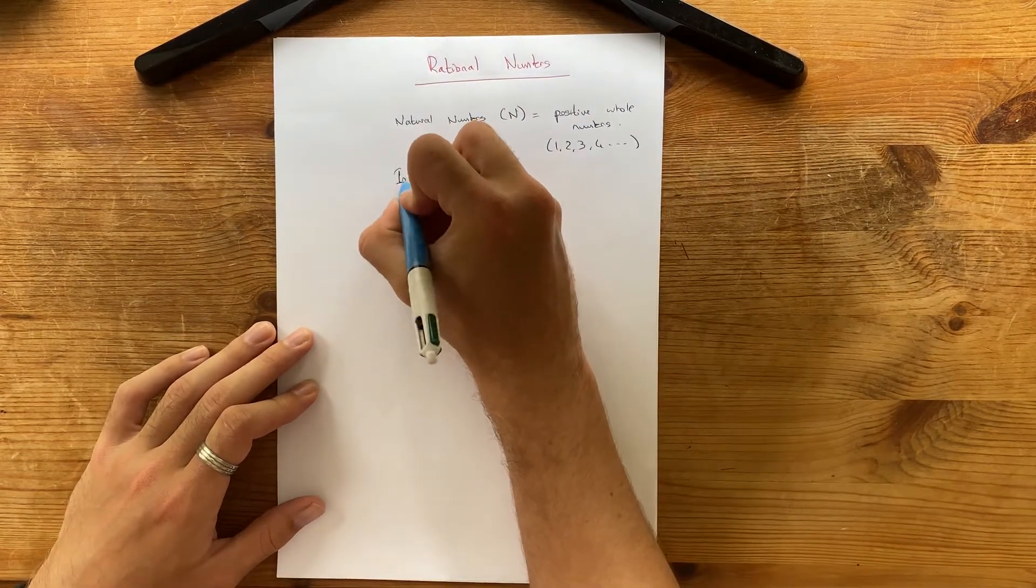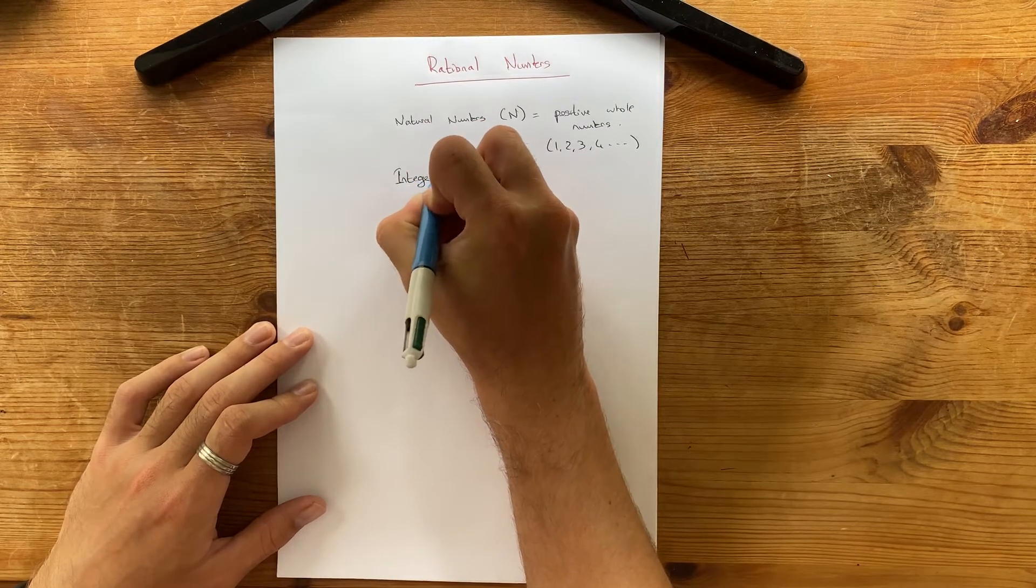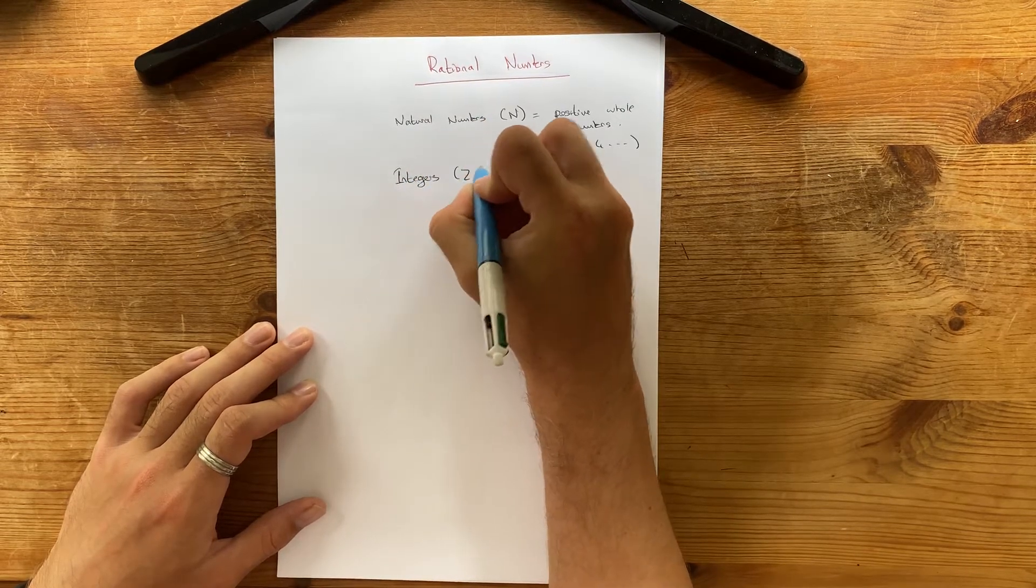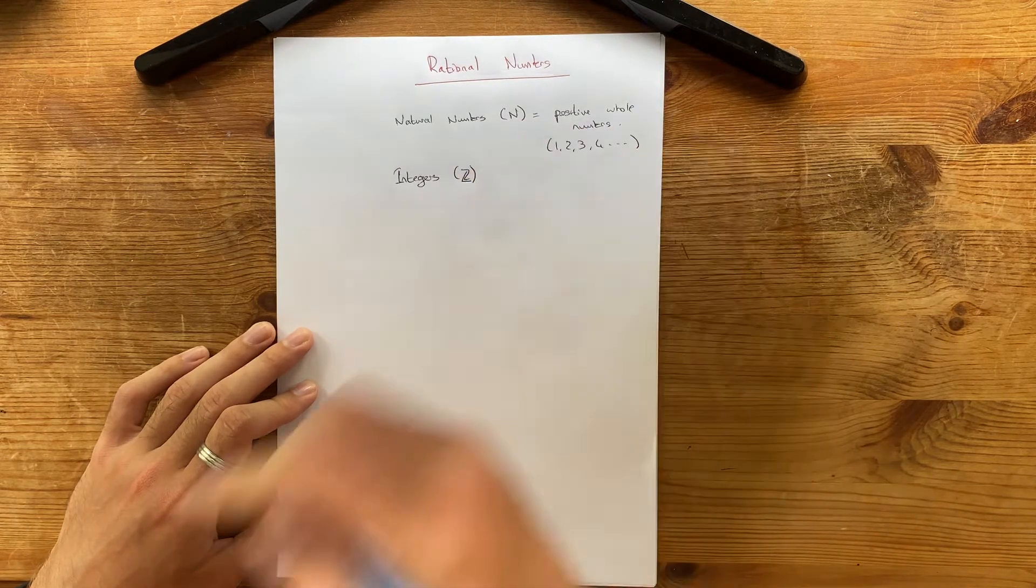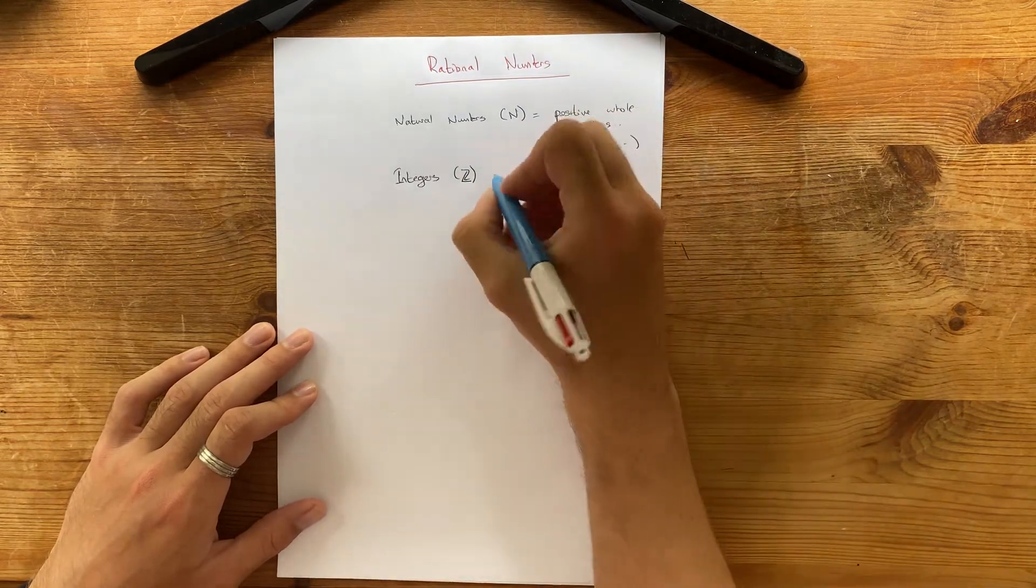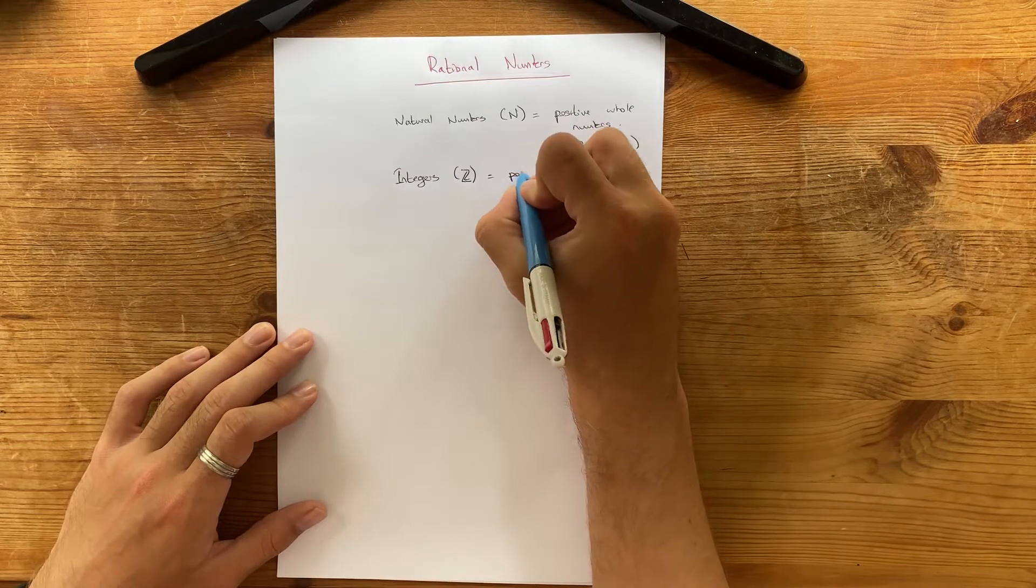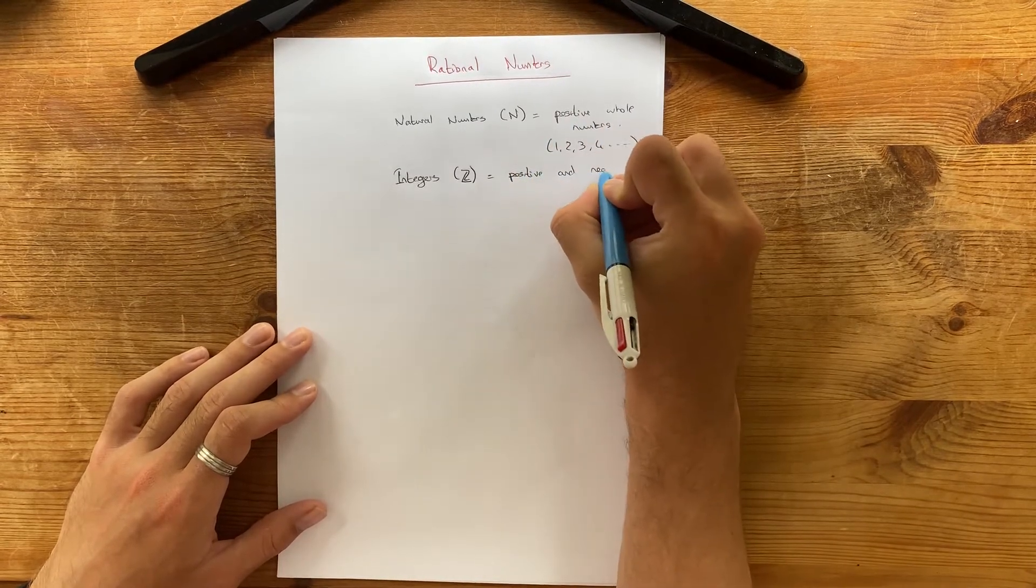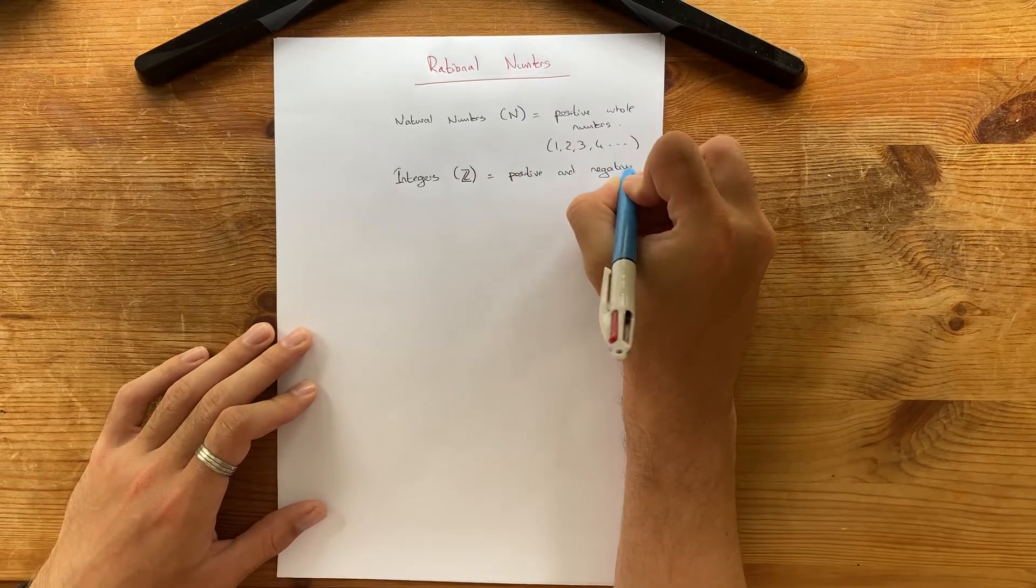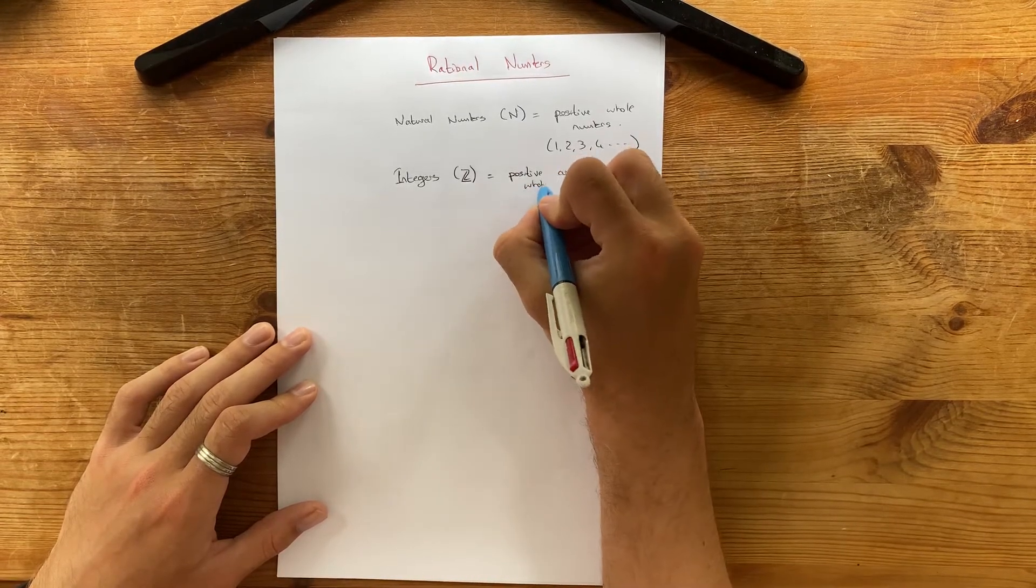And the next one we looked at were the integers. And the integers are represented by a Z. And sometimes you see it with an extra line on the Z. It's a bit weird. But that's how they draw it. And this one is positive and negative whole numbers.